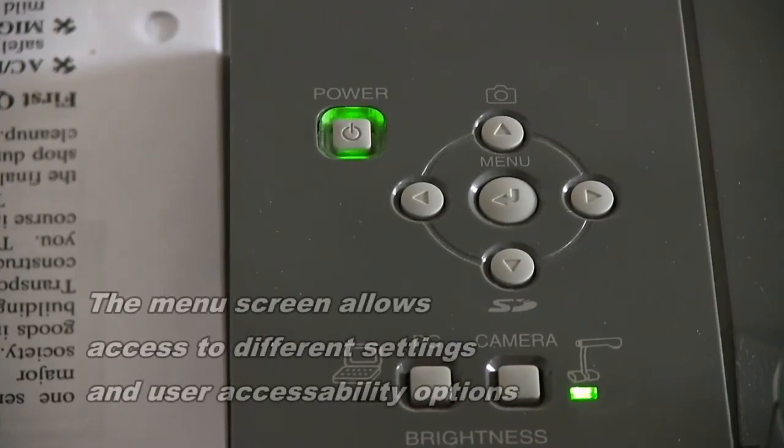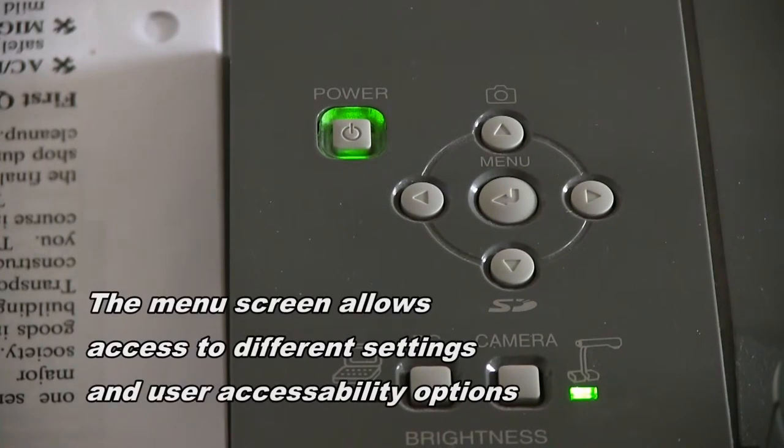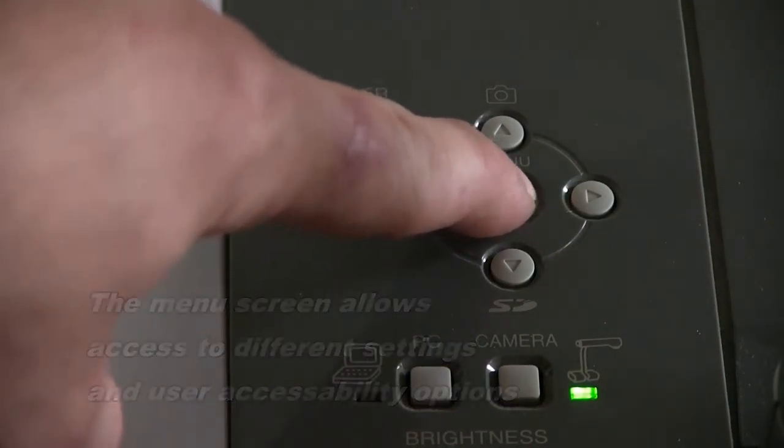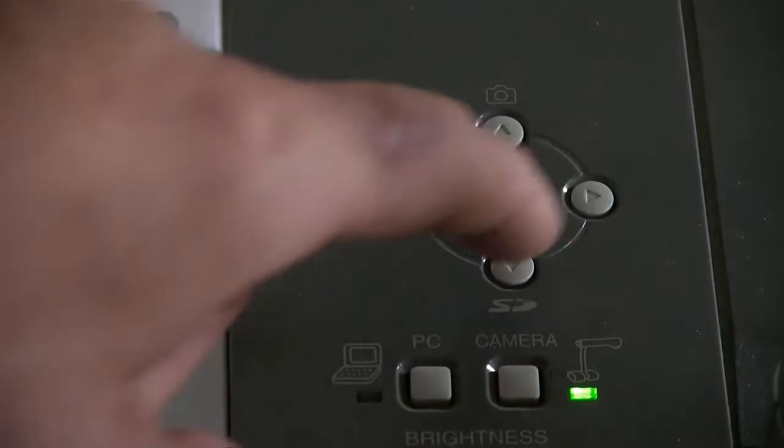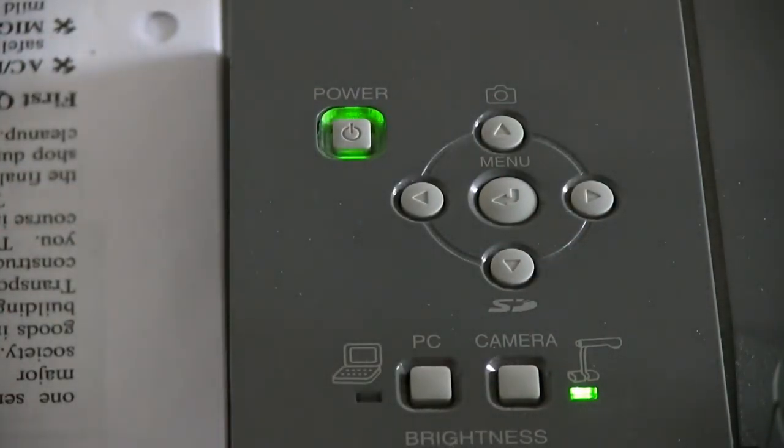To access the settings on the document camera, simply press the menu button, the up, down, left, and right arrows to navigate the different settings.